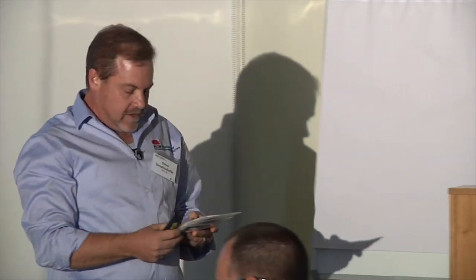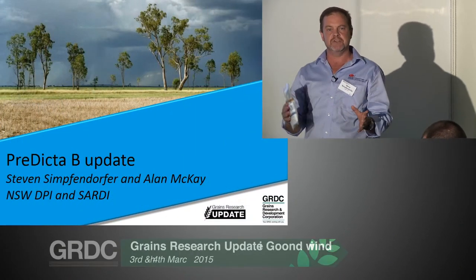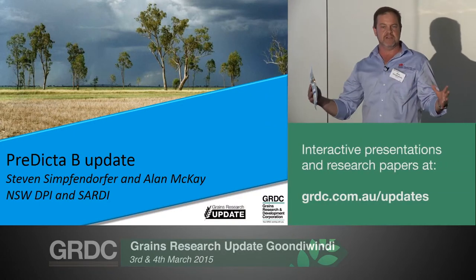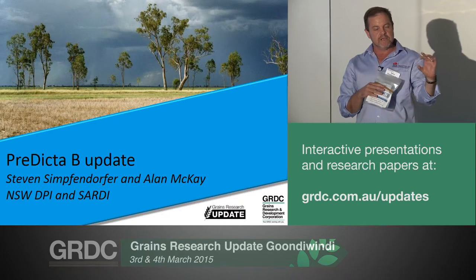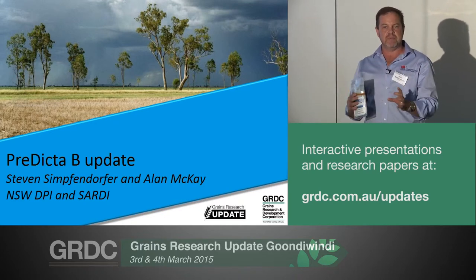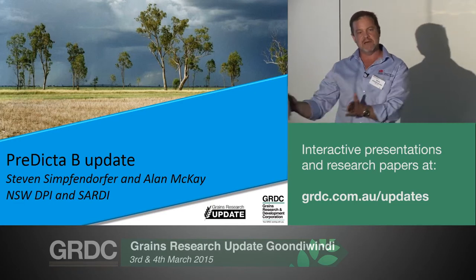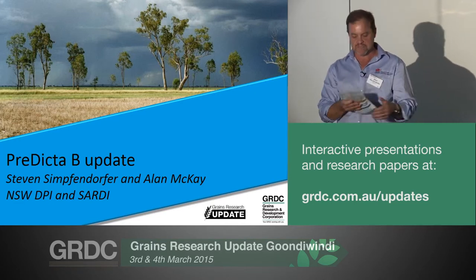We're going to do a Predictor B update. For anyone who hasn't heard of Predictor B, it's a DNA-based test. You take soil samples — small cores to try and get a spatial distribution — and they go off to South Australian Department of Ag, SARDI. They extract the total DNA, and they've got selective probes that pick up the different pathogens. That's calibrated by the rate of increase of that DNA as to how much of the target DNA — so how much of the pathogen — was there in the first place.